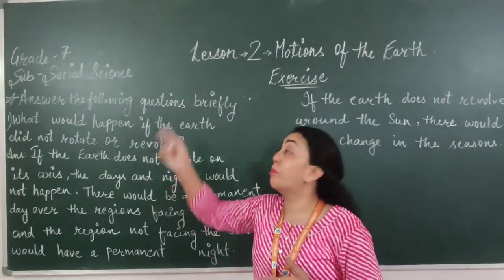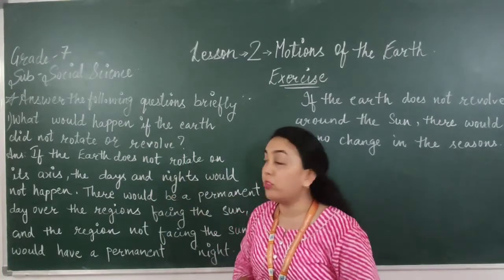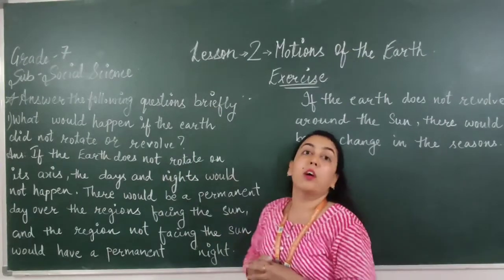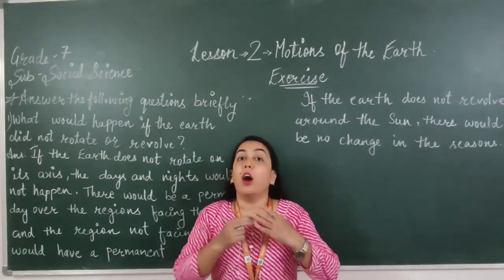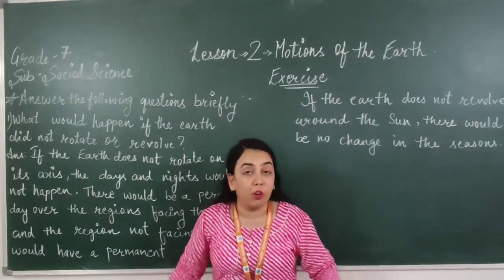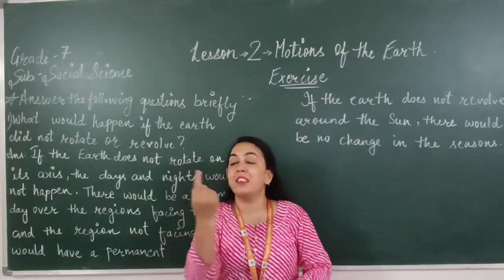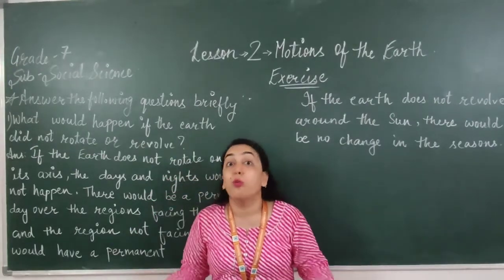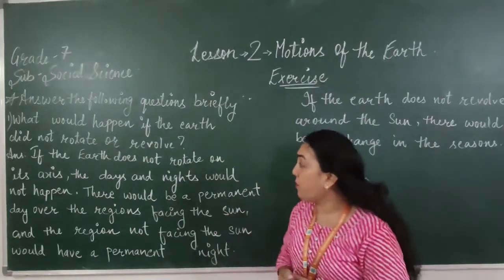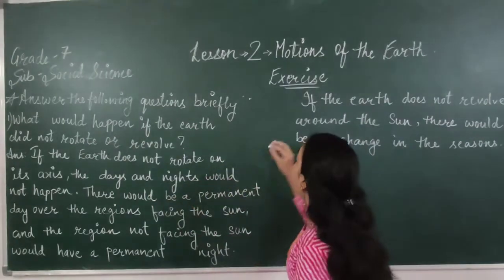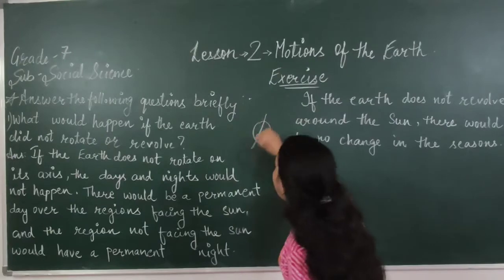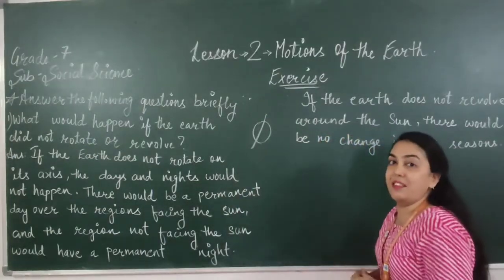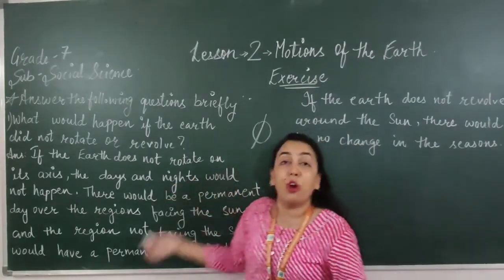Now let's move to the brief questions and answers. First: What would happen if the earth did not rotate at all? If the earth does not rotate on its axis, then days and nights would not happen. Suppose here is the sun and here is the earth — if the earth is not rotating, one half will always face the sun while the other half will always face away.